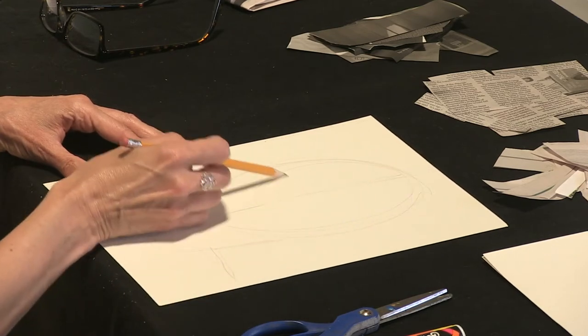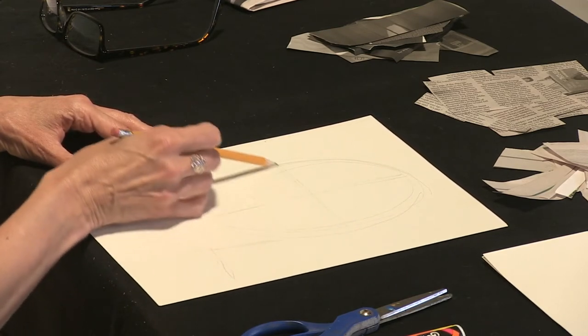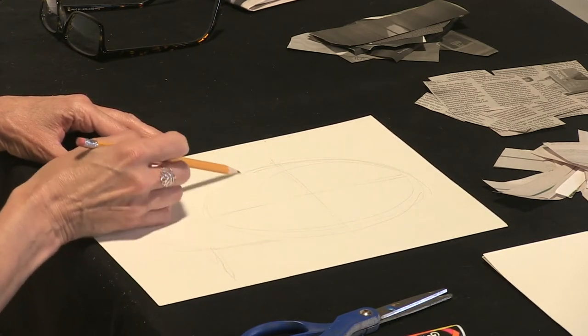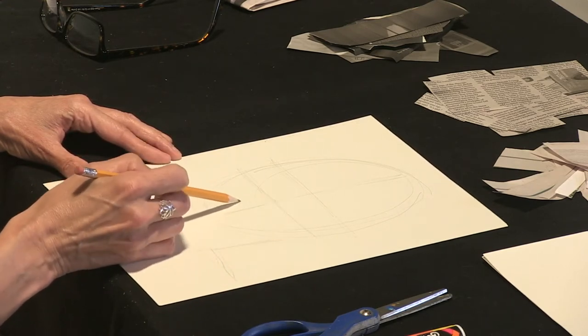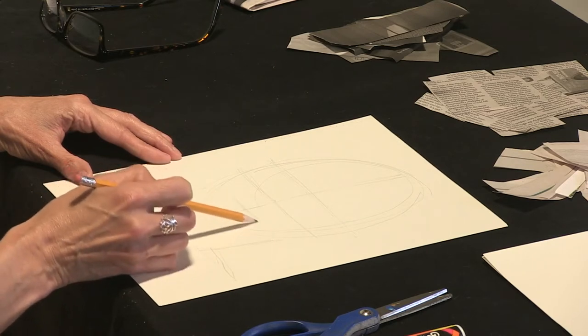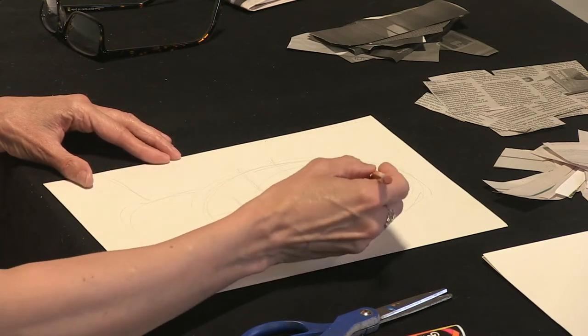I'm also going to just drop in a proportion map just to help me kind of find my way. So center line, midline for my eyes fall, another halfway between my eyes and my chin, midline for my nose, and then a midline for my mouth, just to help me get set up.